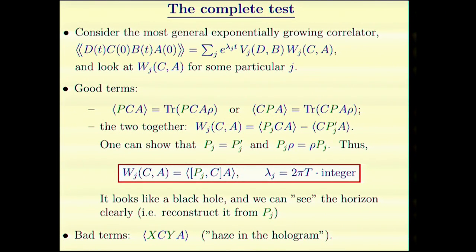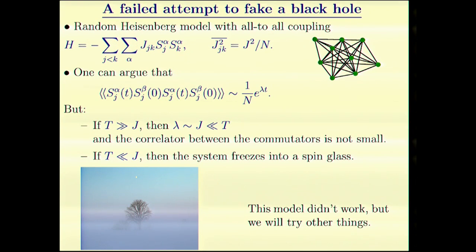Now, I tried to pass the test and I failed. Here is what I tried. This is a random Heisenberg Hamiltonian with all-to-all interactions. Every spin interacts with every other spin with random couplings.